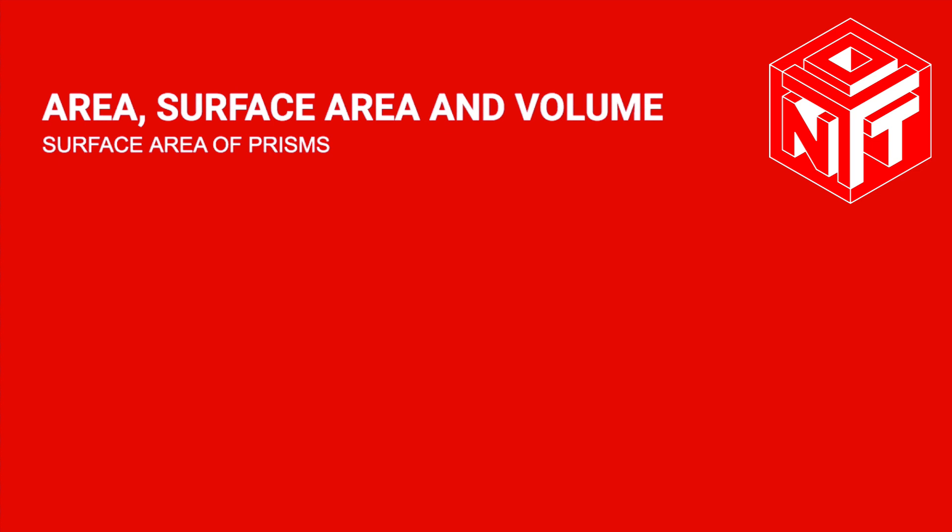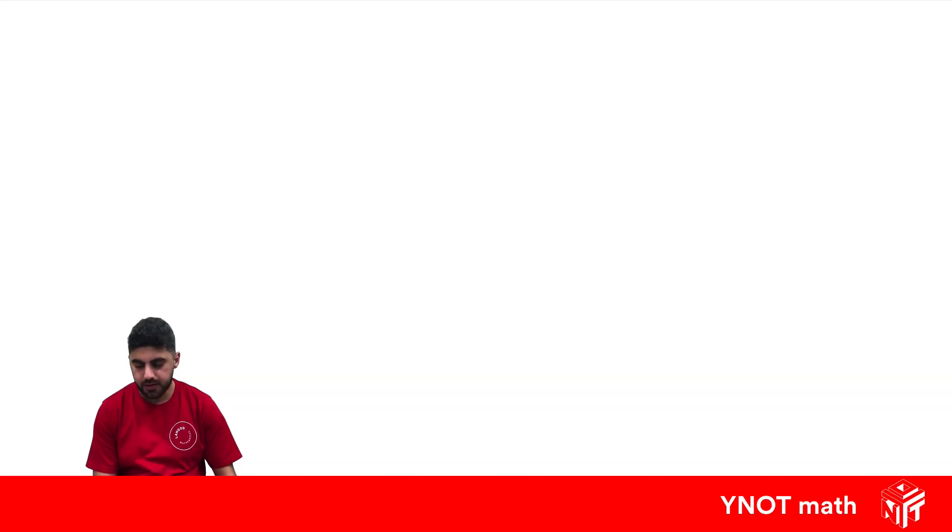Surface area of prisms. When we talk about surface area, we're moving to 3D shapes. Surface area is all of the outside 2D areas added together. A prism always has two faces that are the same, with rectangles joining them together.